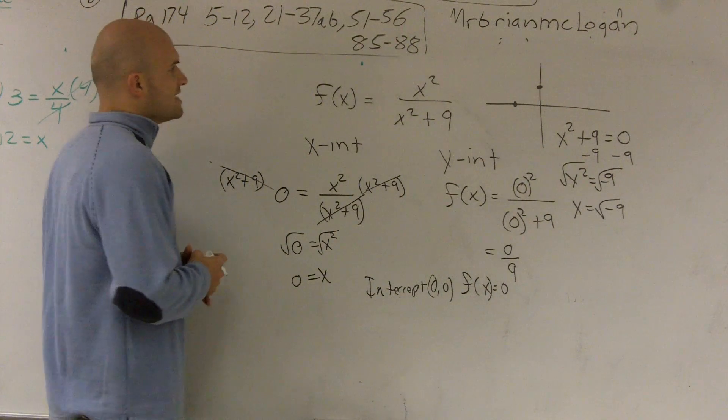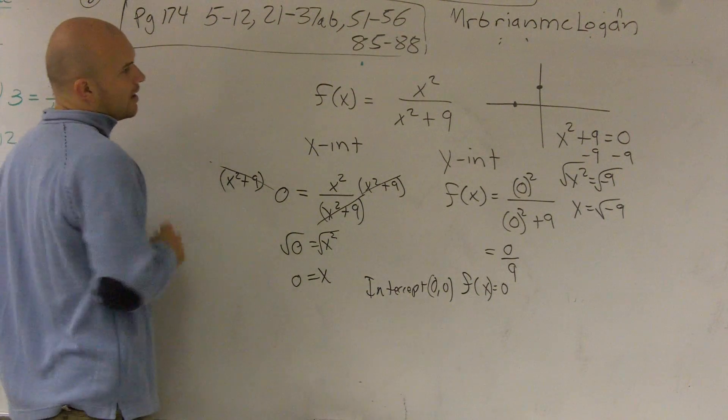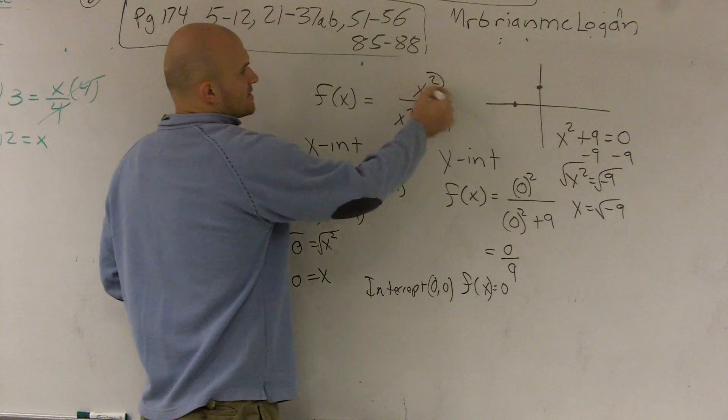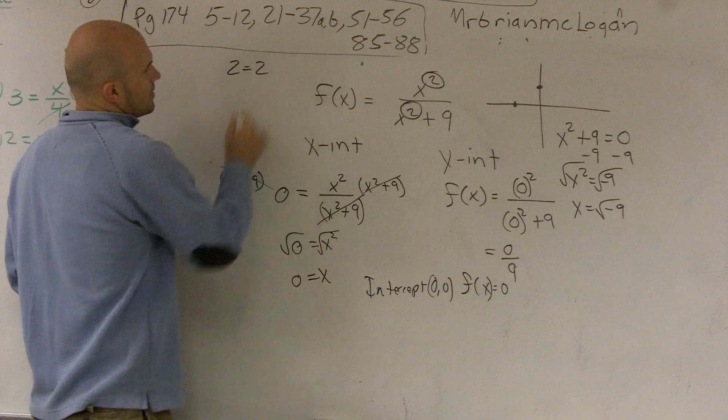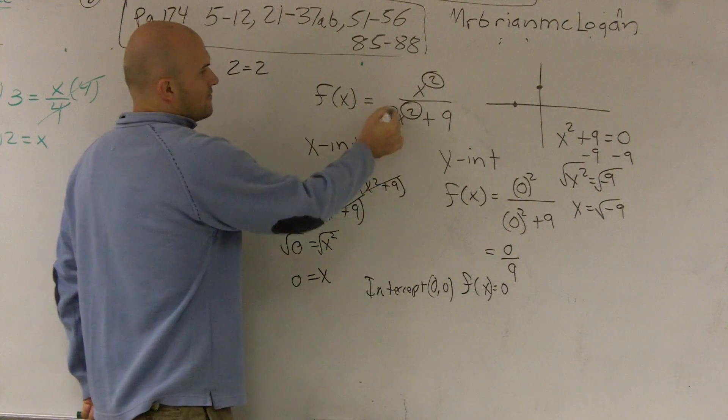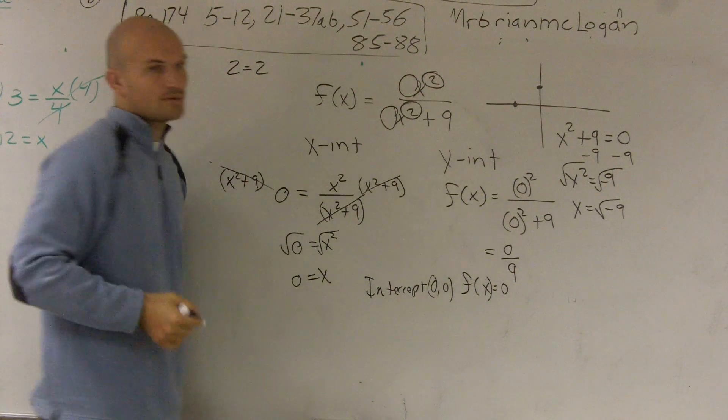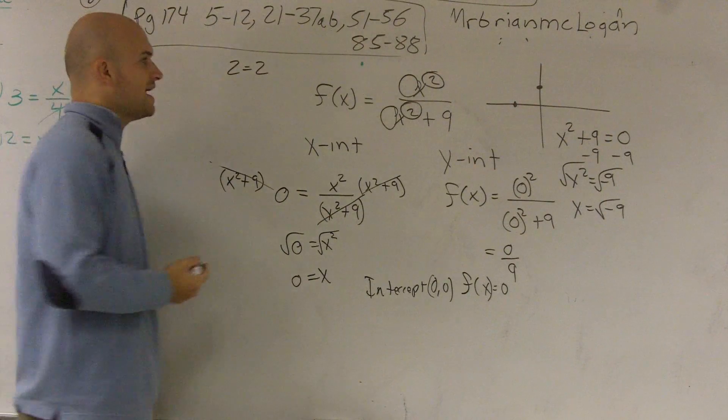When looking for the horizontal asymptote, what we need to do is we need to look at their degrees. And since their degrees are equal to each other, what we do is we take the coefficients of each value and we divide them.